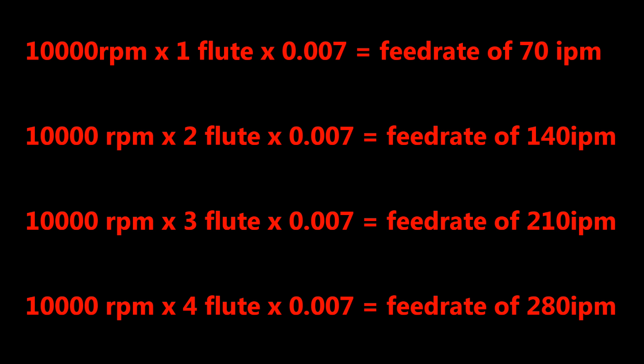You can see here the relationship between the number of flutes a cutter has and the feed rate it should run at for a given chip load. The more flutes a cutter has, the faster the feed rate. That's why people who use 3 and 4 flute cutters on their machines tend to burn their way through the stock — these cutters are designed for milling machines which cut metals and have spindle speeds of about 1,000 RPM, not 20,000.